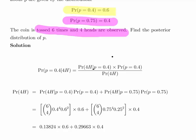That is: the probability of four heads given that the probability was 0.4, times the probability that the assumed probability is 0.4, all over the probability of four heads. This is a straightforward expression of the conditional probability formula using Bayes' theorem.